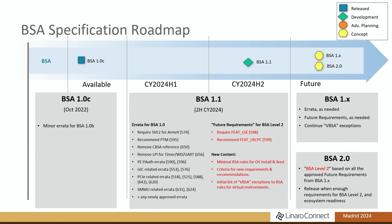I want to mention that we are working on BSA 1.1. The two critical things being added are Feat_LSE and Feat_LRCPC. Those two features are now required by Windows 11, so we want to make sure future SOC and system development includes them. When we have a silicon provider committed to developing a SOC designed to include these two features, we will declare a level two for BSA.